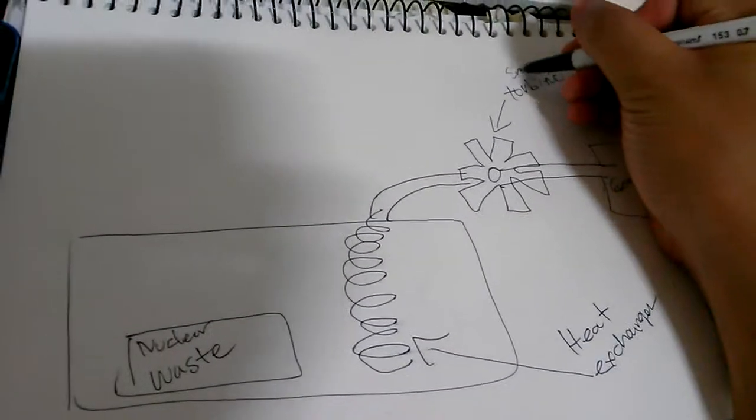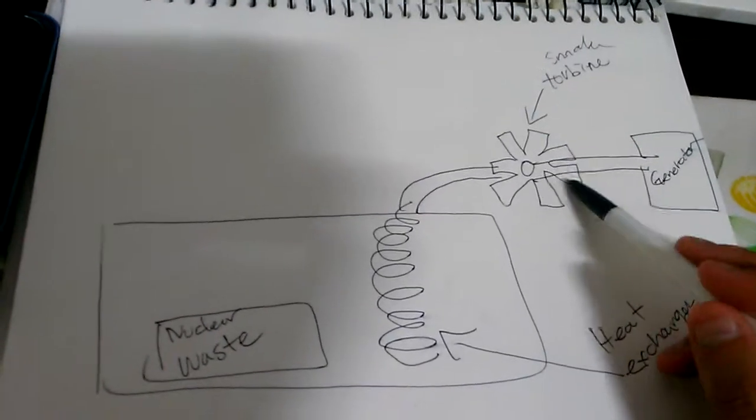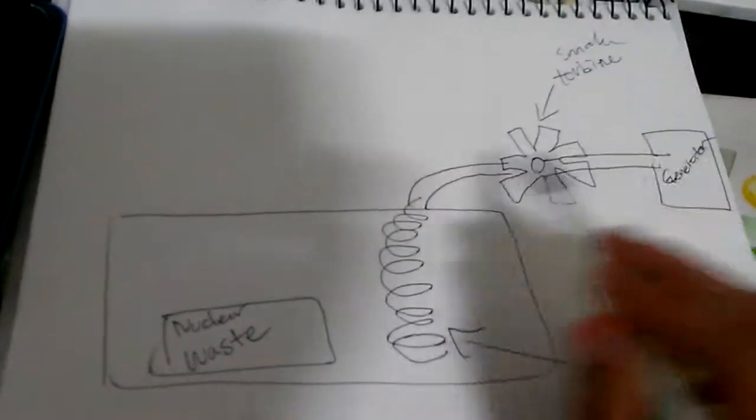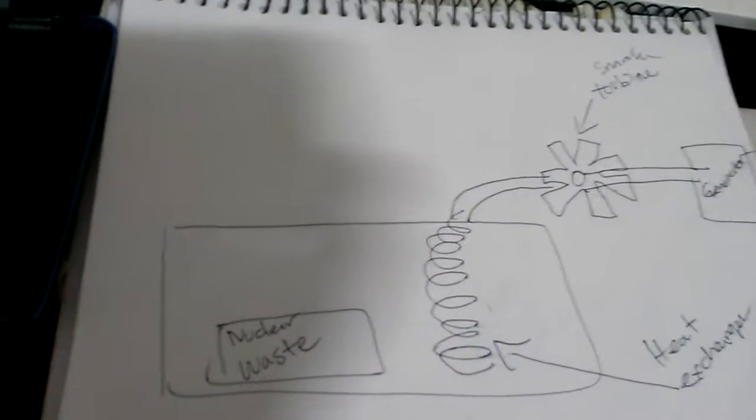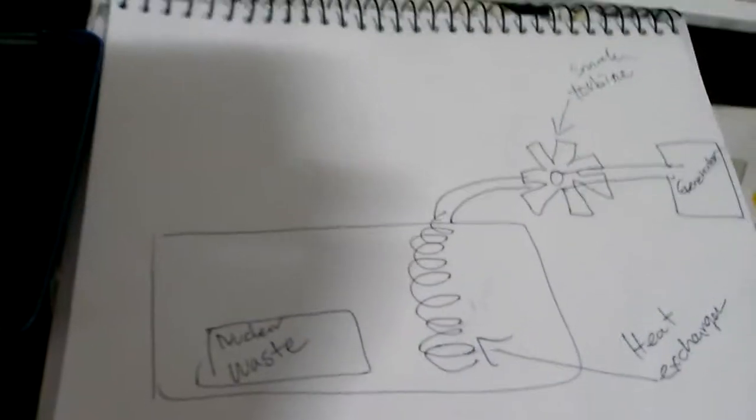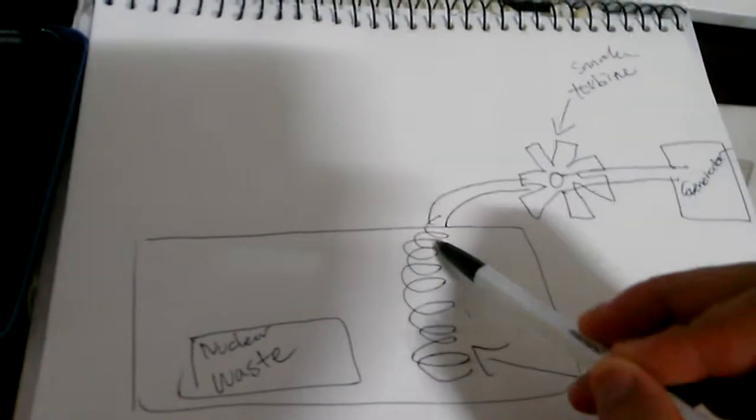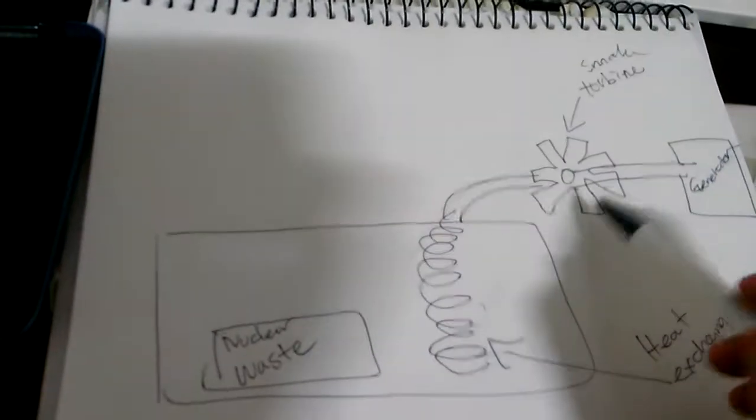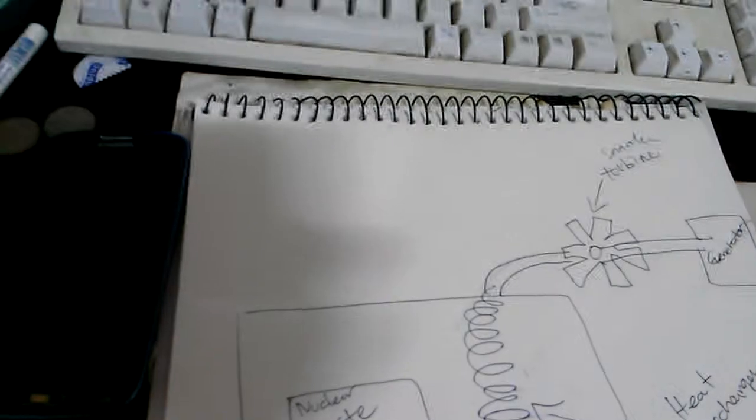So we use a smaller turbine and it will probably spin and run the generator. You can use this for another ten years maybe because it's a smaller turbine. There's another way to recycle nuclear waste, this is a little complex but I will explain to you.